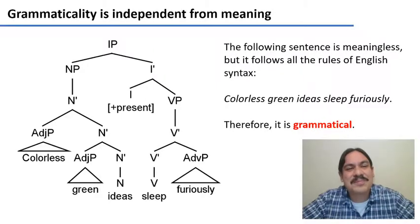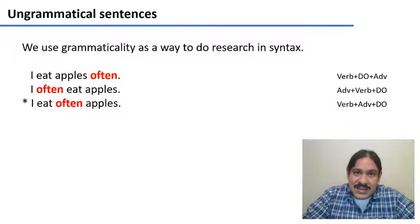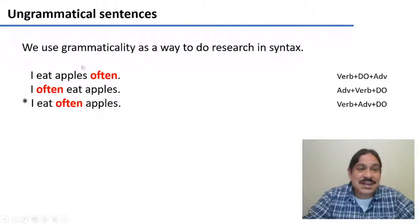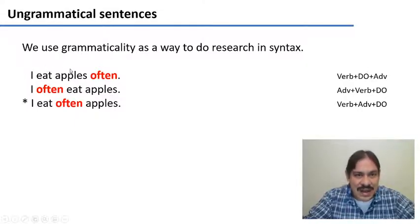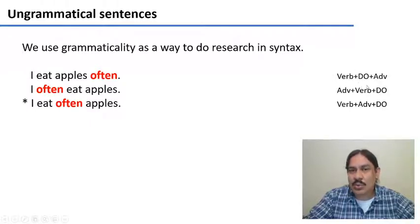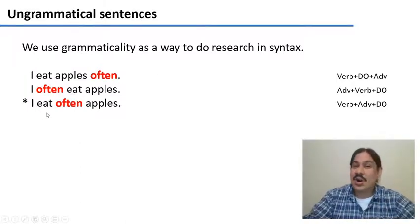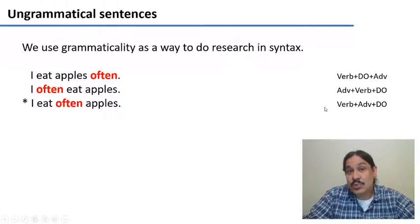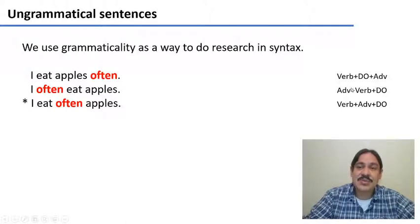We can use grammaticality to do research in syntax and figure out why some languages are different from others. For example, in English you can say 'I eat apples often' — verb, direct object, adverb — and 'I often eat apples' — adverb, verb, direct object. Both are grammatical. But 'I eat often apples' — verb, adverb, direct object — is not a sentence of English. Your brain does not contain a sequence of rules that could generate verb, adverb, direct object. So the first two sequences exist in your grammar of English, and the third one does not.